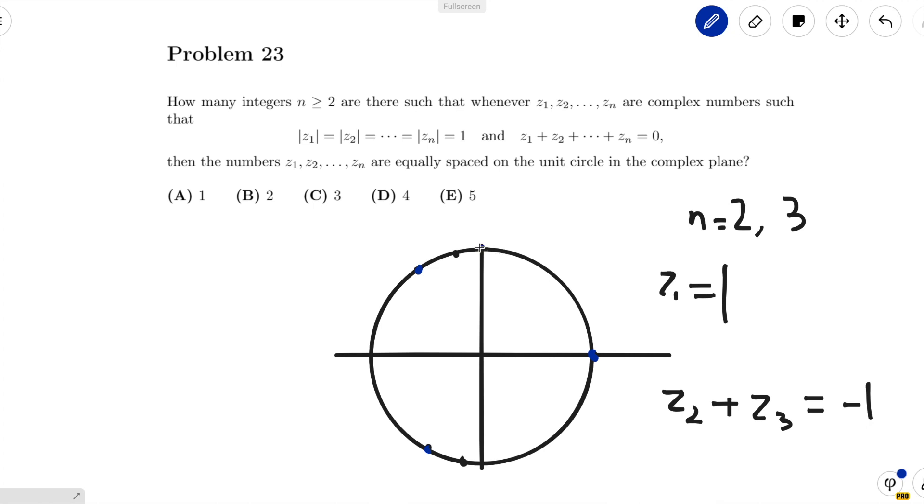Now what we can do is just keep adding points on the y-axis. So for n equals 5, this configuration could be possible. For n equals 7, we can have 4 roots on the y-axis, and so on. So for any odd n greater than or equal to 5, it doesn't work.